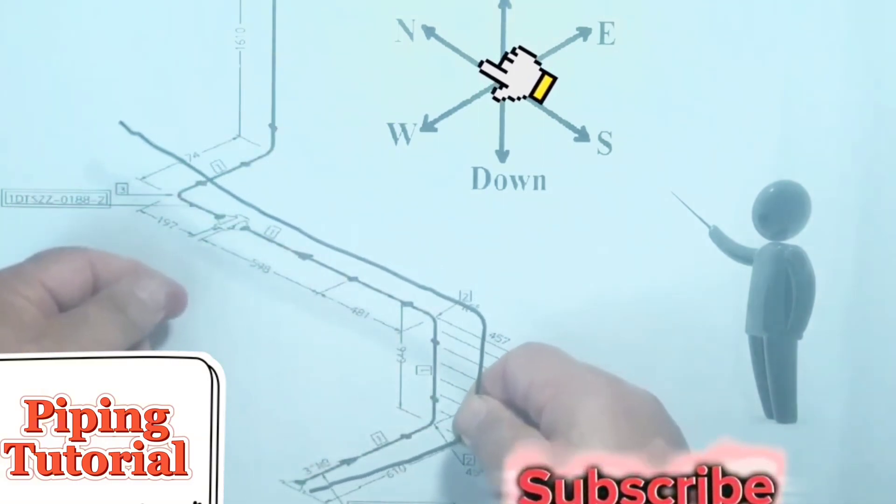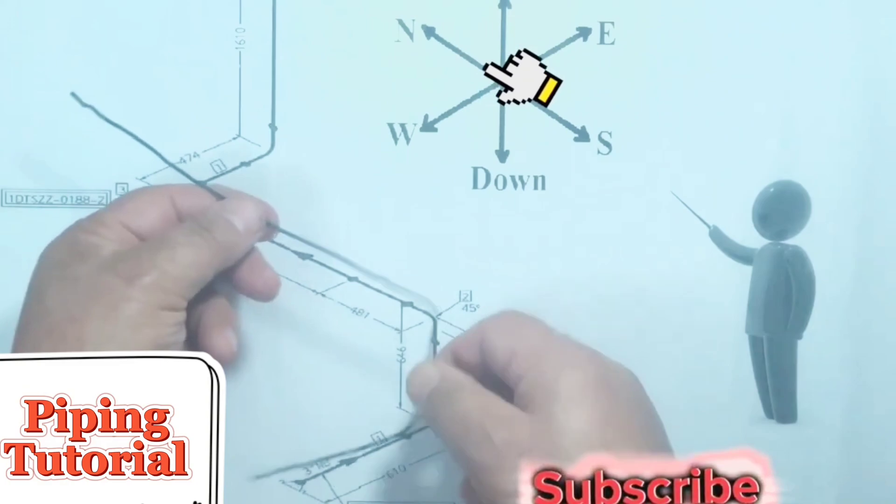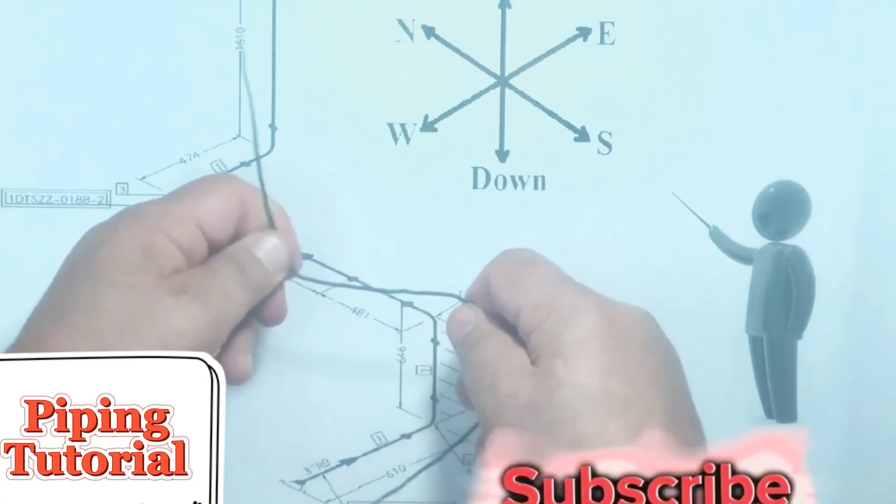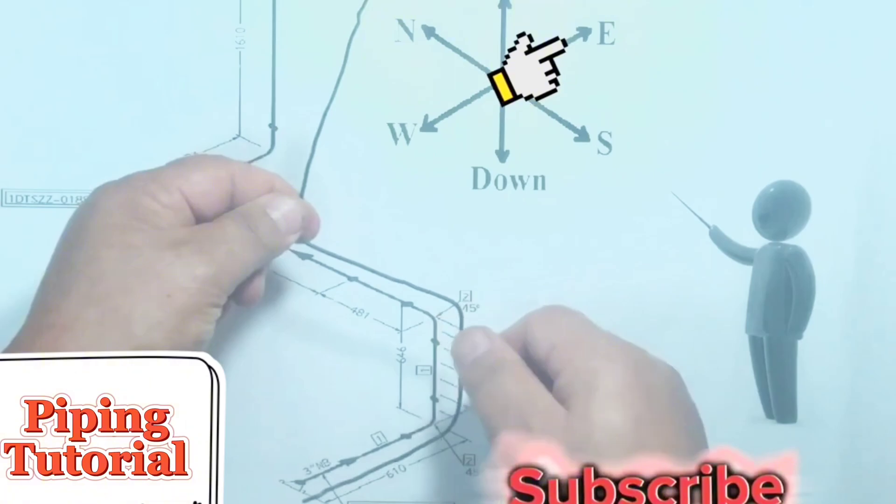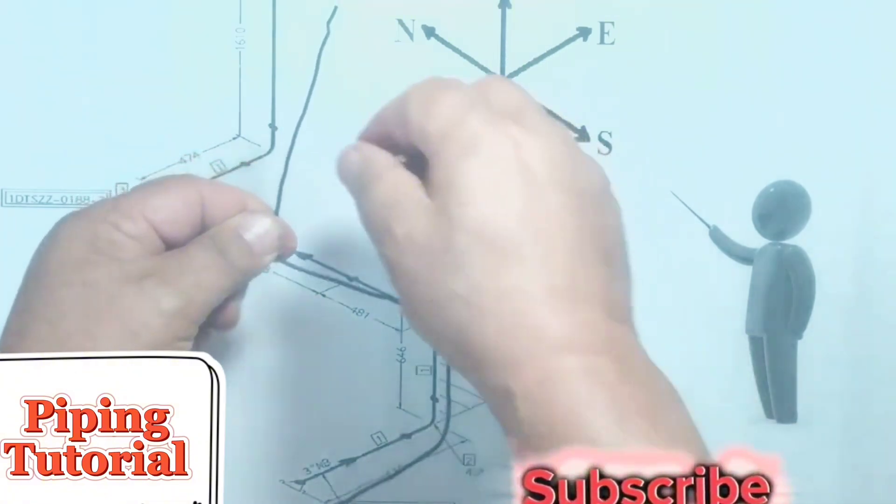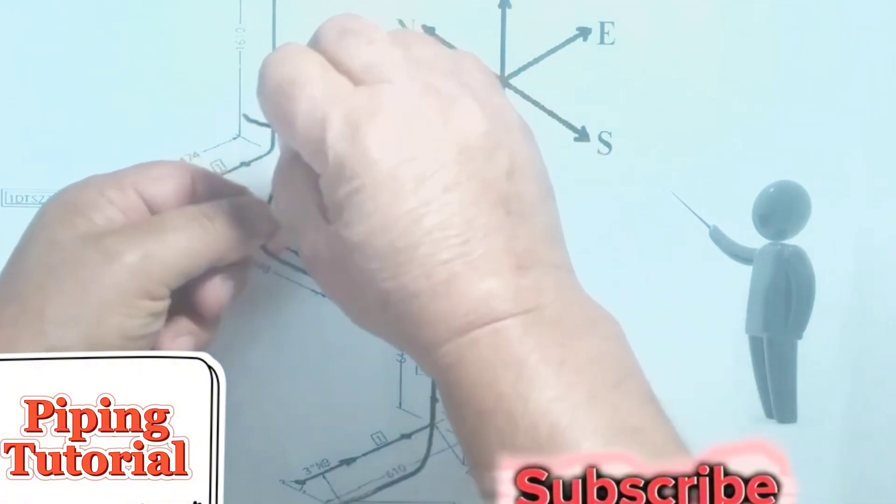Then the wire continues to the north direction. Then wire continue to bend to the east direction. At last we bending wire to the up direction.